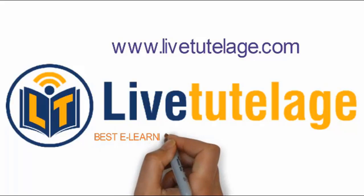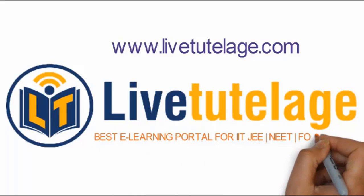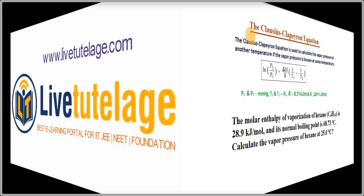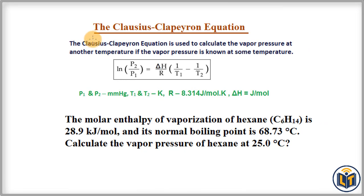Welcome to LiveToPlace.com, the best e-learning portal for IIT-JEE and foundation. In this video, I will discuss the Clausius-Clapeyron equation. This equation is used to calculate the vapor pressure at another temperature if the vapor pressure is known at some temperature. It basically relates the vapor pressure and temperature of a substance when the molar enthalpy of vaporization is given.